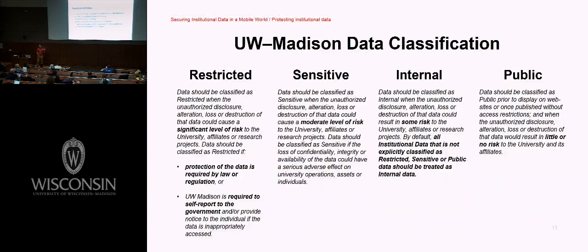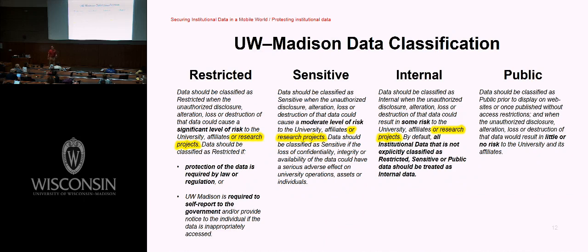Here at UW-Madison, and I imagine at other UW system schools, we classify data based on its sensitivity and the risk of loss. We have these categories: restricted, sensitive, internal, and public. It's easy to look at data classification and say it's restricted data if it's protected by law or regulation — SSN, PHI, PII, financial account numbers, DNA profile — the things called out in the Wisconsin data breach notification law. Those are easy to identify.